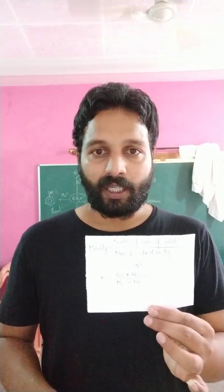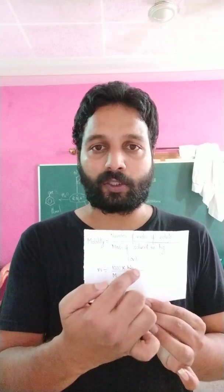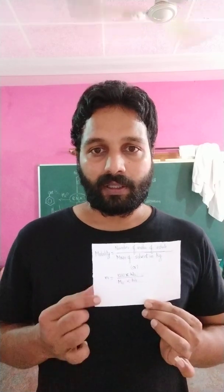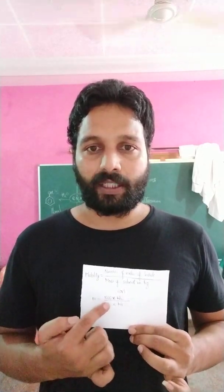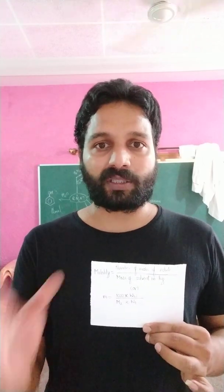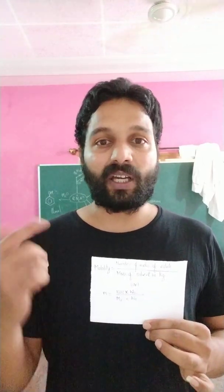The next concentration term is molality. In molality, we again consider moles. It is the ratio of number of moles of solute to the mass of solvent in kg. In all previous cases the denominator referred to solution, but in molality it refers to solvent. The other formula is: molality = (w₂ × 1000) / (M₂ × w₁), where w₂ is the weight of solute, M₂ is the molecular mass of solute, and w₁ is the weight of the solvent.